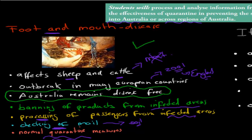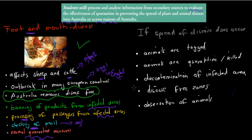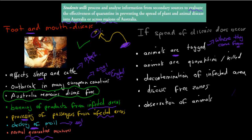If a disease does spread into Australia, there are also procedures in place to deal with it. For example, all animals are tagged - the tag says where they came from. So if we find that cattle brought to a slaughterhouse is detected to be infected, because of that tag we know where it came from and can try to eliminate the problem at the infected source area. Also, infected animals are quarantined or killed in many cases to make sure it doesn't spread to any further location.